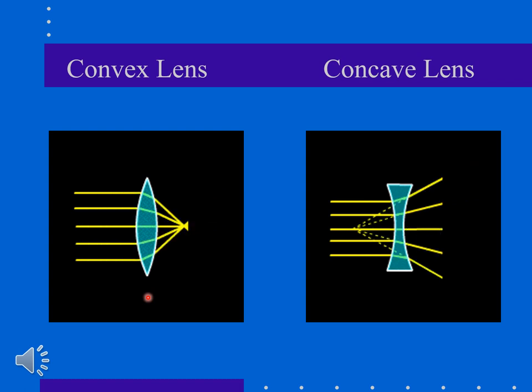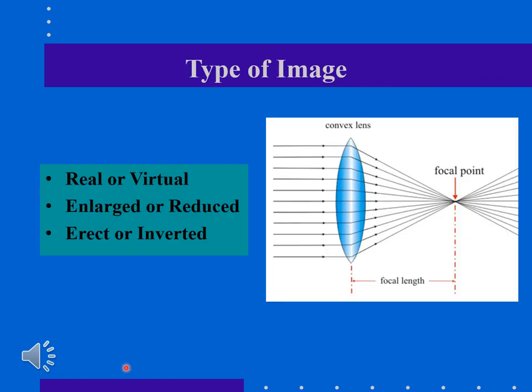But convex is a different story. Convex images can be real or virtual, enlarged or reduced, erect or inverted. Most cameras that you're going to be dealing with and taking your images actually have convex lenses.